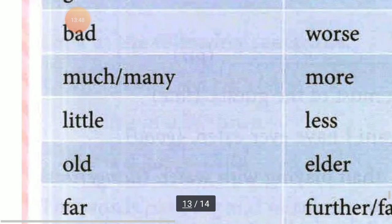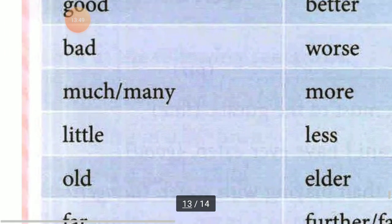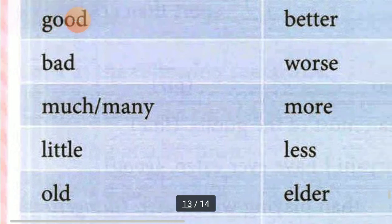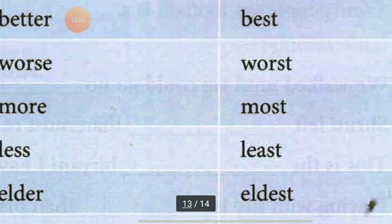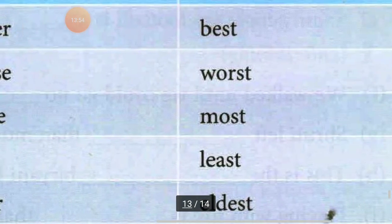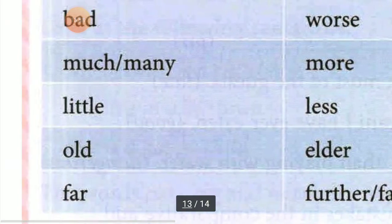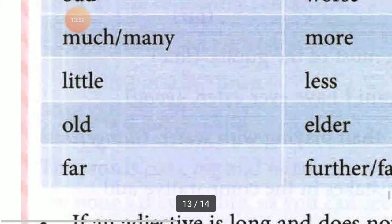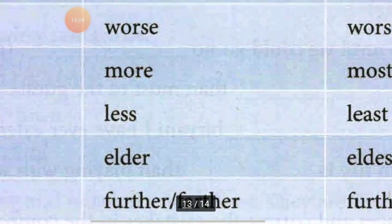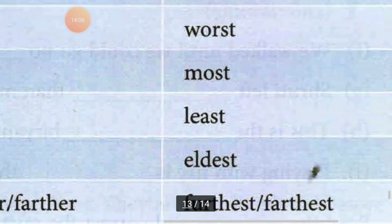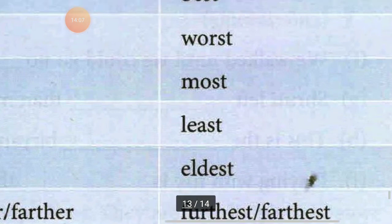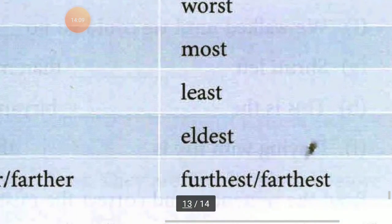Next word is old — comparative: elder, superlative: eldest. Next word is far — comparative: further or farther, superlative: furthest or farthest.